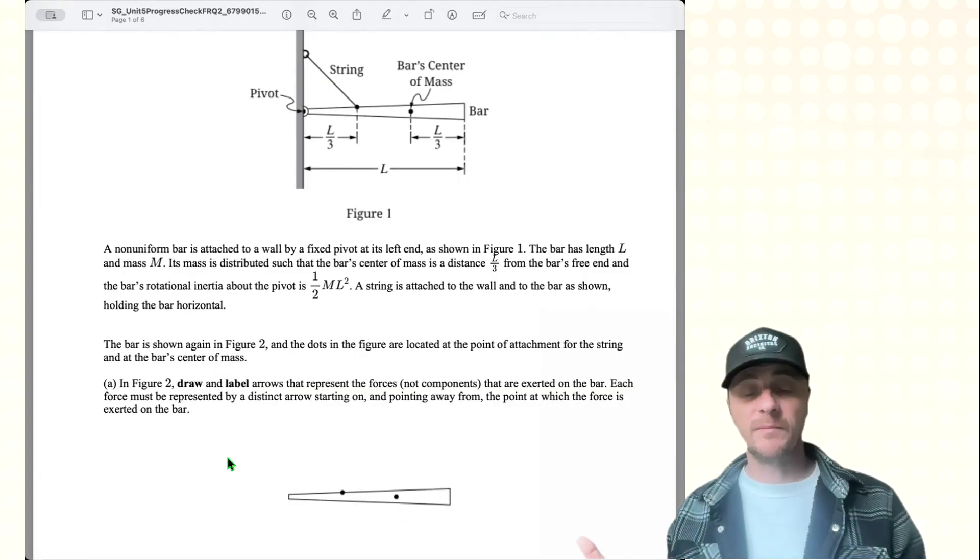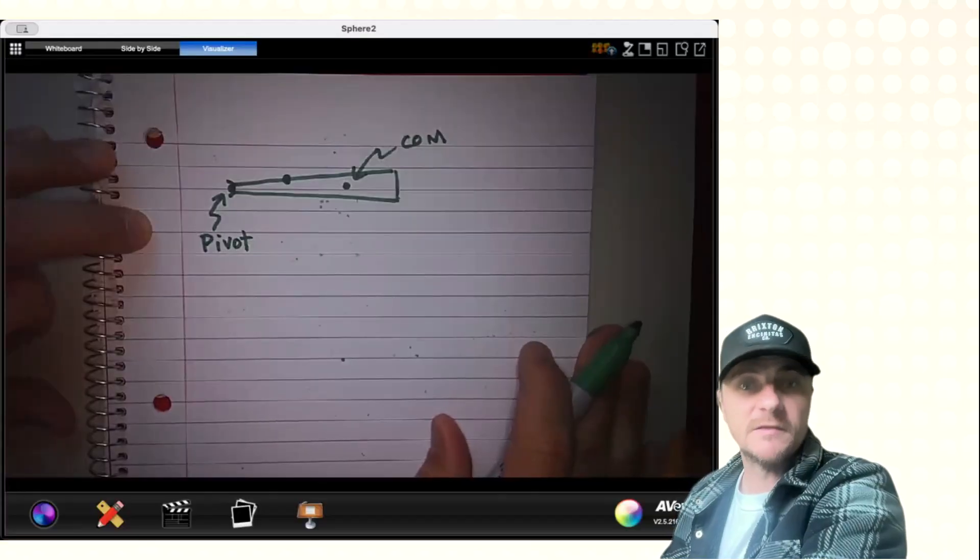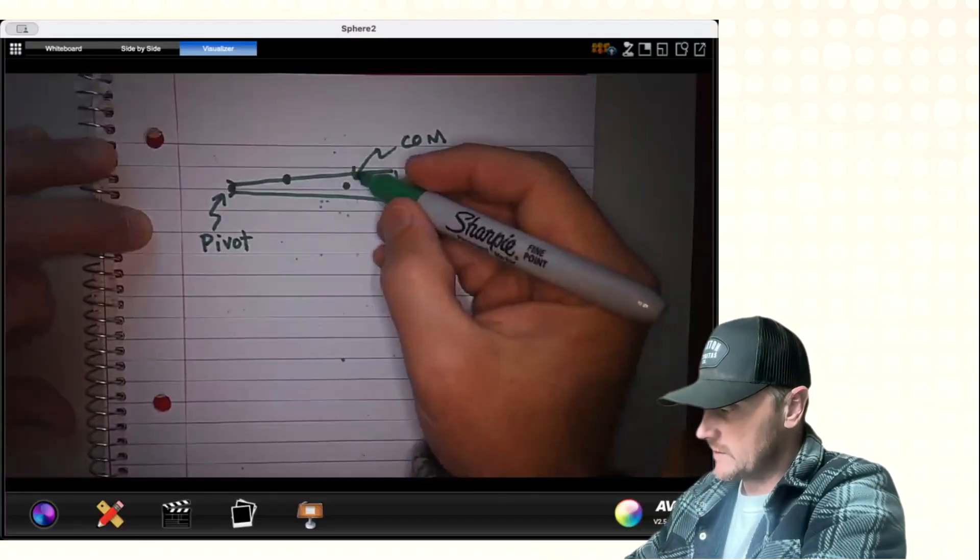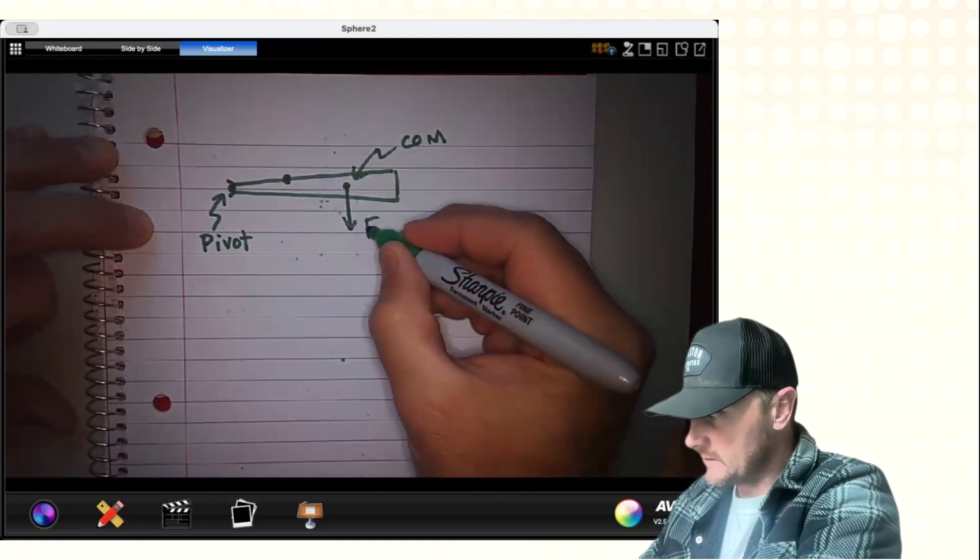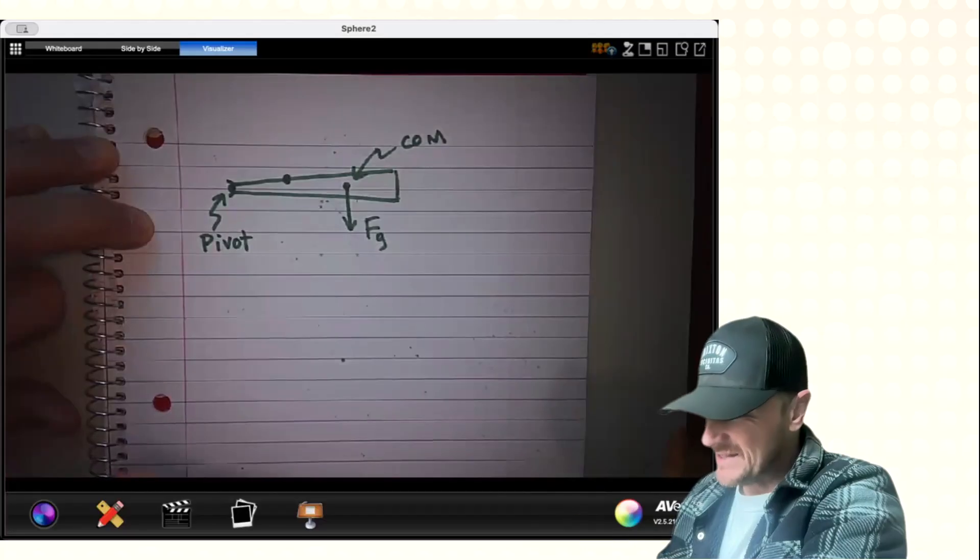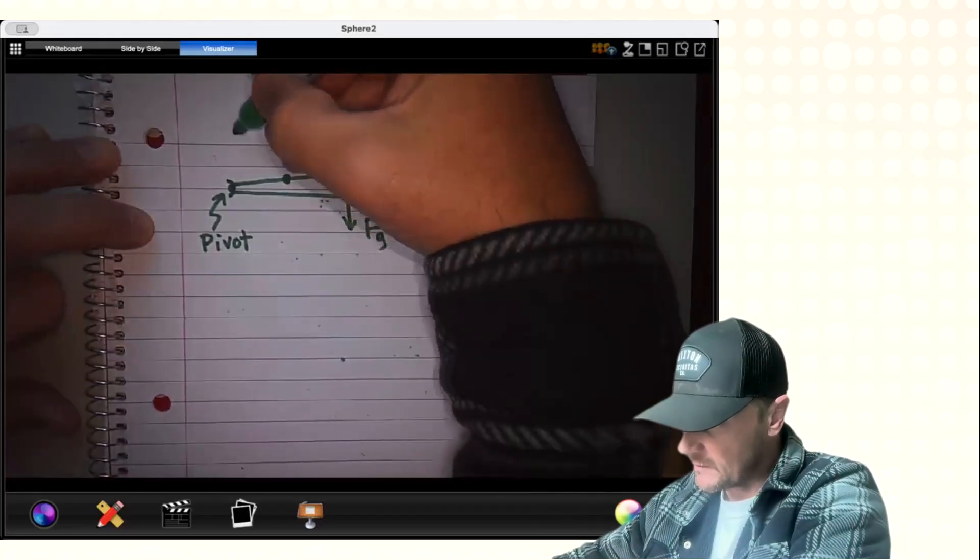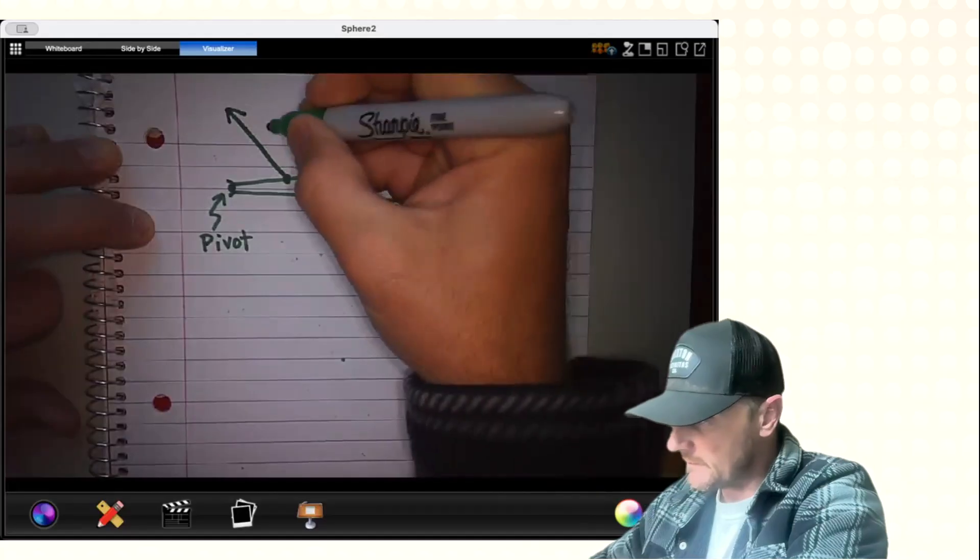So Part A, we're doing a free body diagram. We're going to draw all of the forces acting on this system. There's the system they have for us and we know at the center of mass there has to be gravity. That's where gravity is acting. So we'll put Fg here and I'll make it about that long. Now tension, on the other hand, which acts along this string, I'm going to make even longer and there's a reason for that.